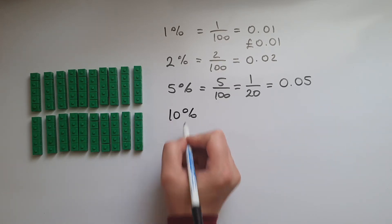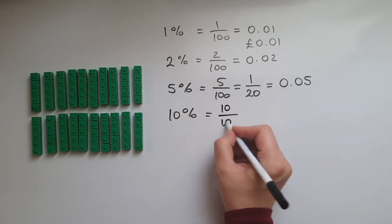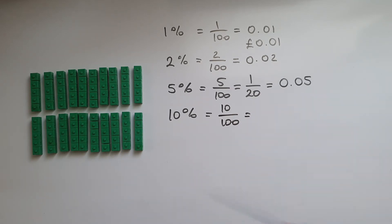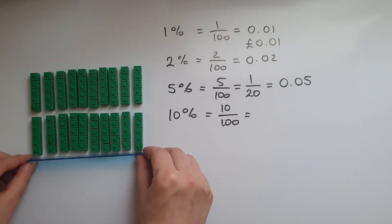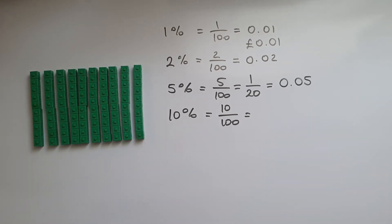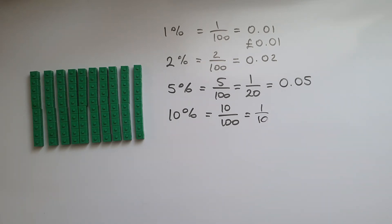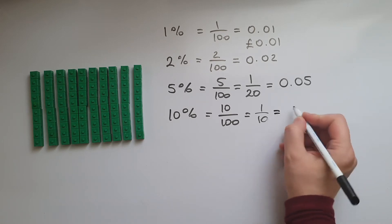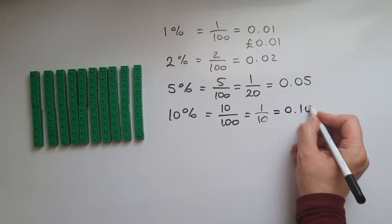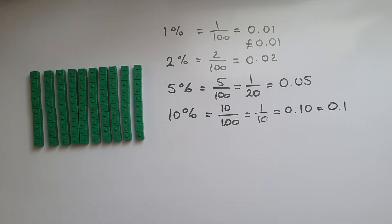What about 10 percent? That is the same as saying 10 out of 100, and it's also the same as saying one tenth, because there are 10 lots of 10 in 100. So if we divide an amount by 10 it's going to give us 10 percent of it. We can write this as 0.10 or 0.1 — it means the same thing.